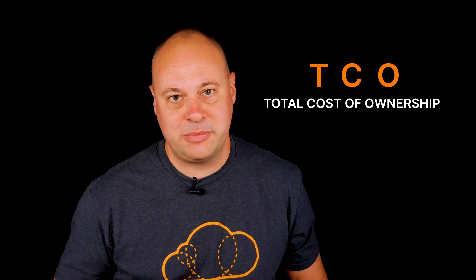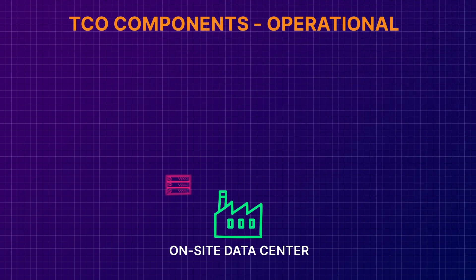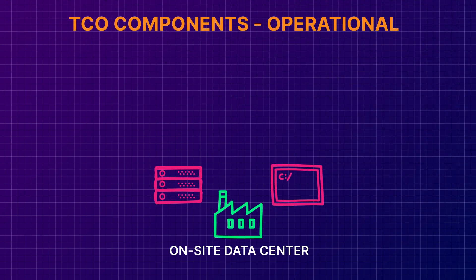When evaluating cloud adoption, most business cases will compare our current state to a potential cloud-based future state. One way people try to do this is by building a total cost of ownership, or TCO. A basic TCO will describe the costs that I call the low-hanging fruit, and those are usually infrastructure and software costs. They're easy to get to because we can just look at our invoices for that.